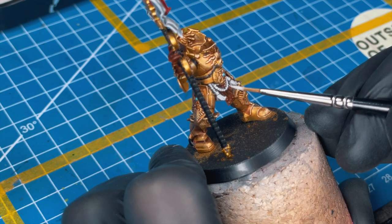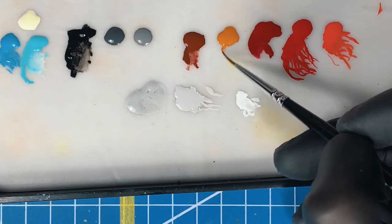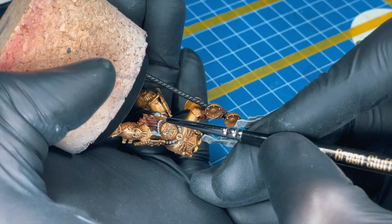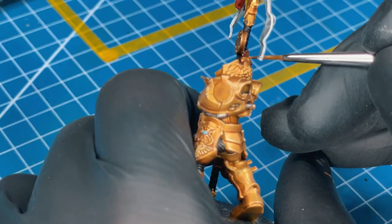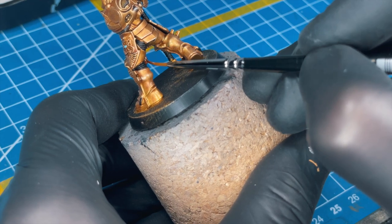I almost forgot about the last highlight. If you want to highlight all the leather parts, use the Deathclaw Brown and just paint all the edges of your brown, and maybe paint some scratches here and there.